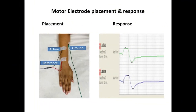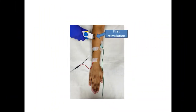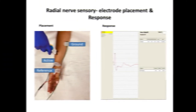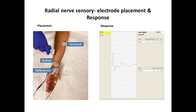What is the electrode placement and stimulation sites of the radial nerve? In this video, we are discussing motor nerve electrode placement. The site of electrode placement is extensor indices proprius, with the first being distal stimulation and the second being proximal stimulation. The other is sensory nerve electrode placement, where the site of placement is extensor carpi radialis.